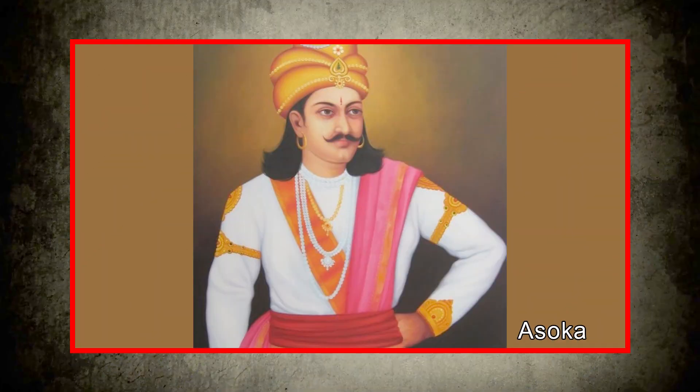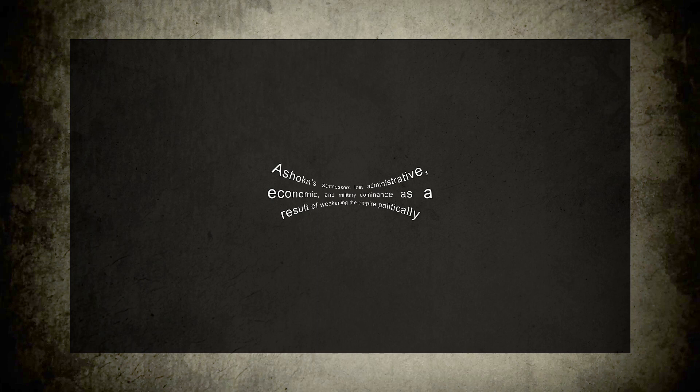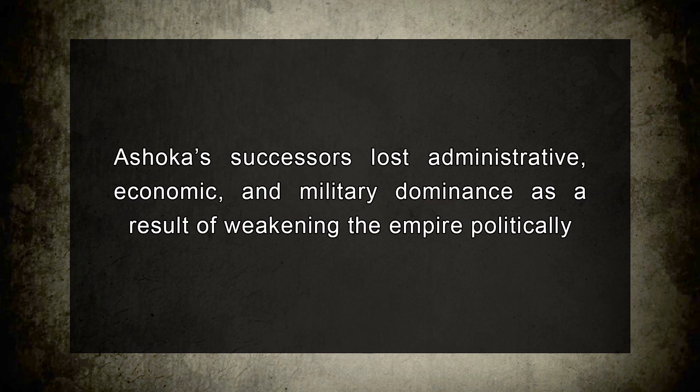According to H.C. Roy Choudhury and B.N. Mukherjee, the empire was destined to fail by the emergence of weak kings after Ashoka. While strong political leaders with charisma could increase a country's power, the rise and fall of a powerful empire cannot be adequately described by focusing on the character of a single or few dynastic rulers. In general, these successors lost control of administrative, economic, and military domains, weakening the empire politically.